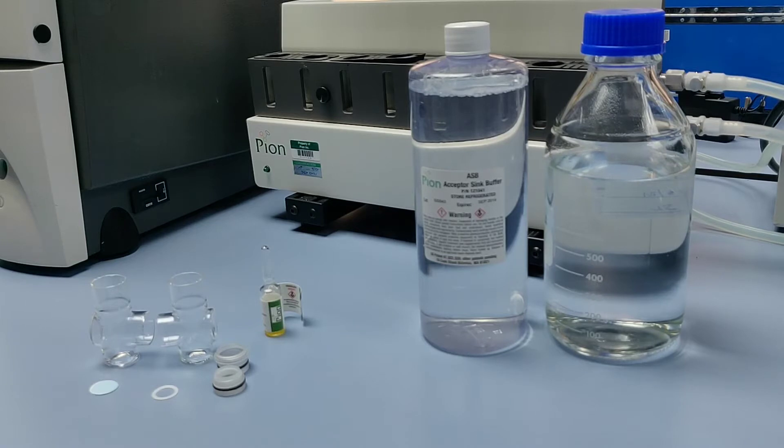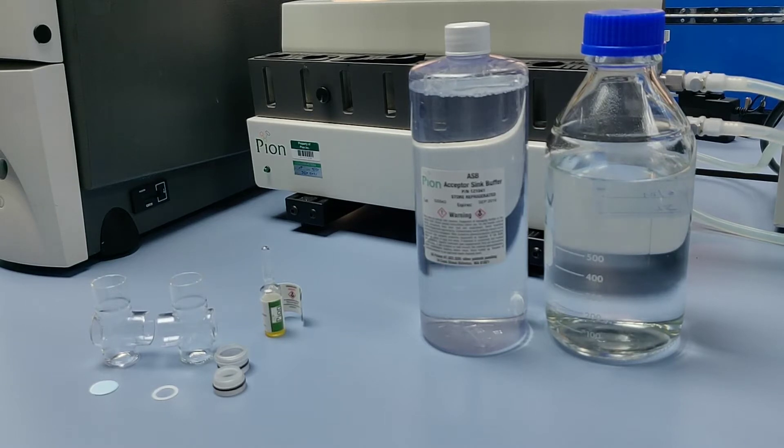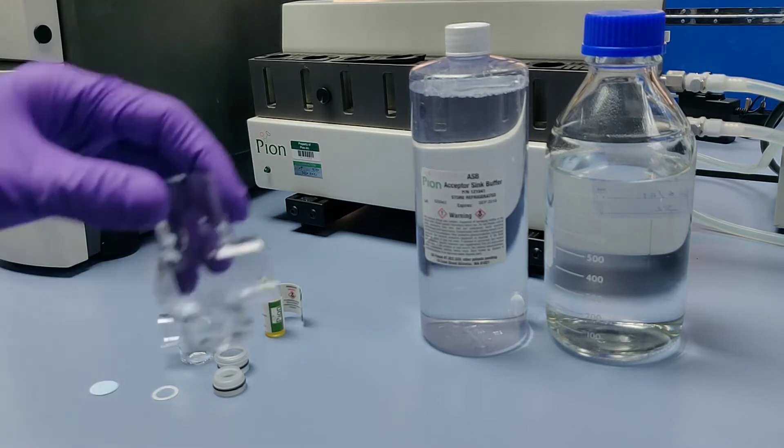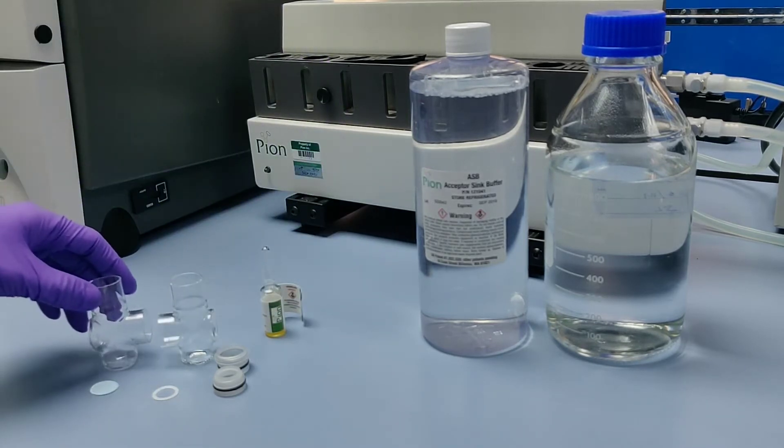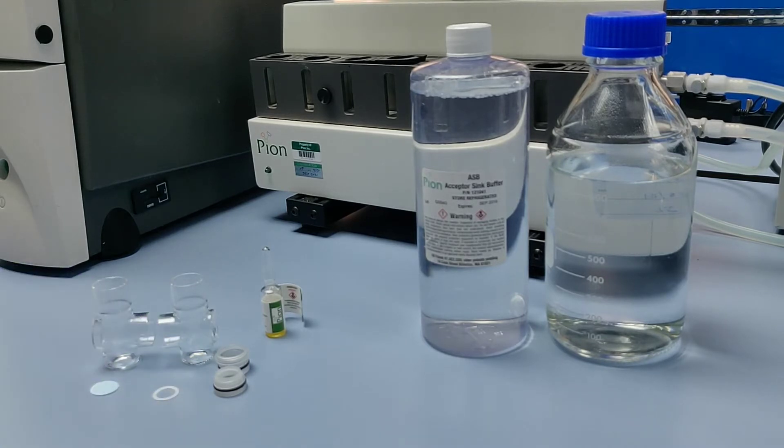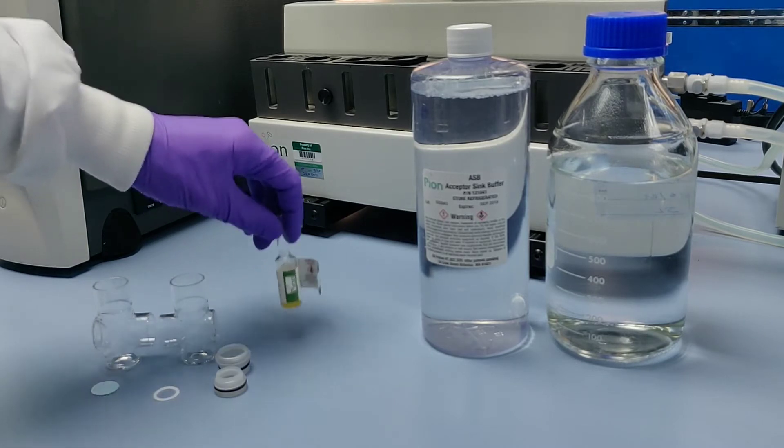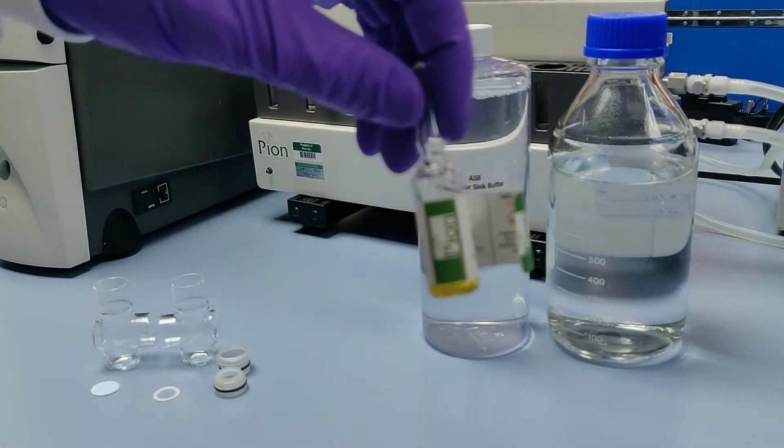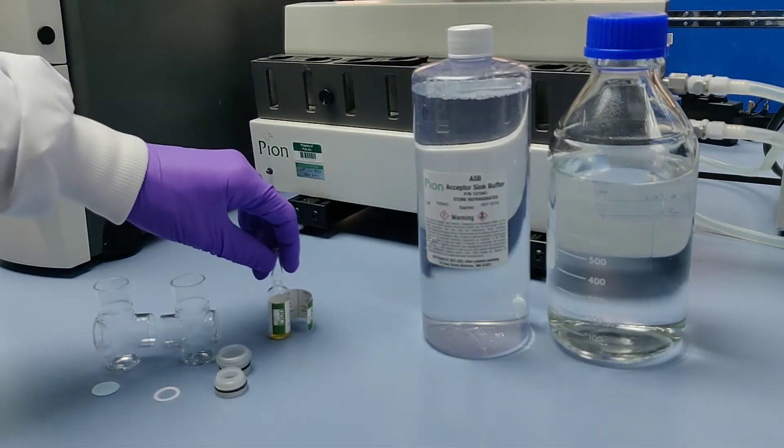To assemble the flux pairs, we will need four separate components: the glass chambers themselves, a PVDF membrane support, a membrane holder made up of female and male parts, and a Teflon washer. We will also need to have on hand GIT lipid solution for coating the membrane, and our media for our donor and acceptor chambers.